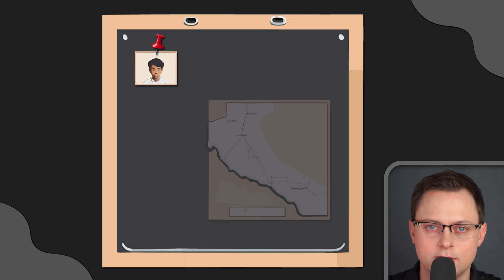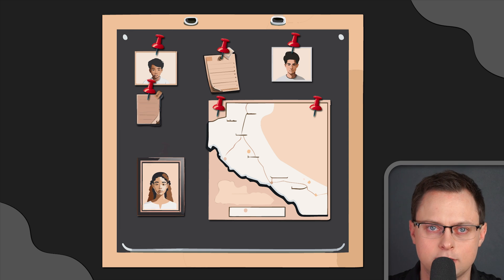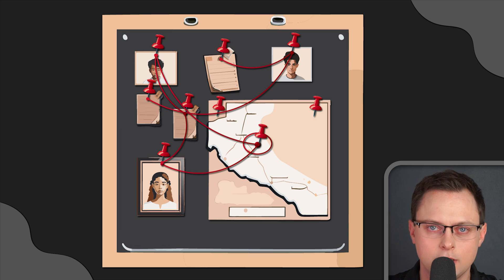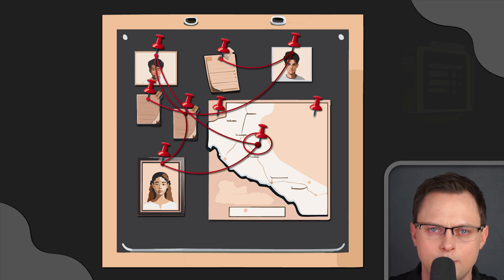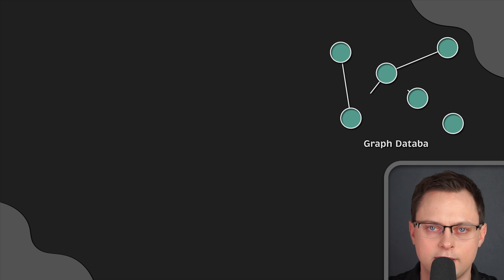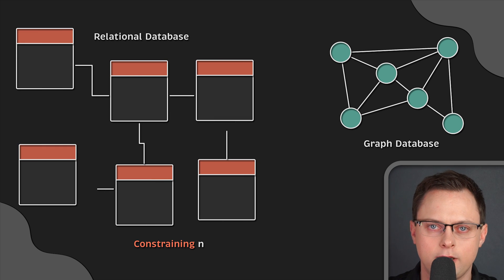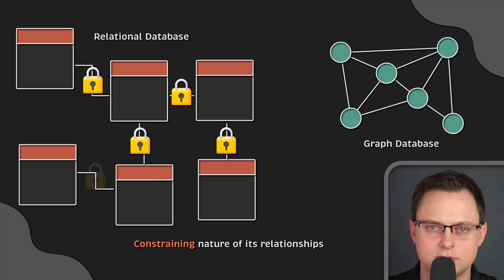Have you ever seen a detective board in the movies with pictures, news articles, and notes connected by thumbtacks and yarn? Immediately, you can see the power of connecting the dots in all of those relationships. Imagine taking that detective board and applying a mathematical engine that could query its data relationships — that's a graph database. I want to explain graph databases by starting with relational databases. One of the main traits of the relational database is the constraining nature of its relationships, which makes it ideal for processing transactions.